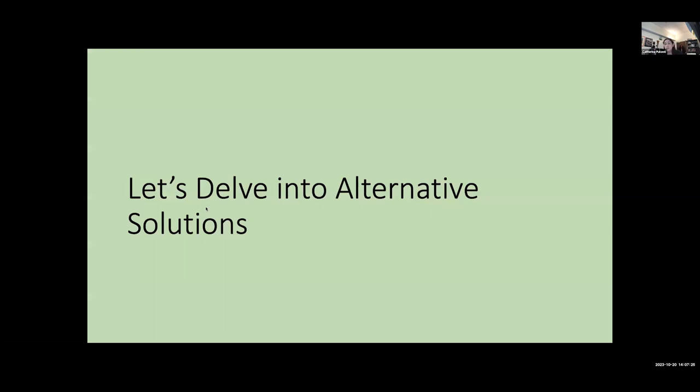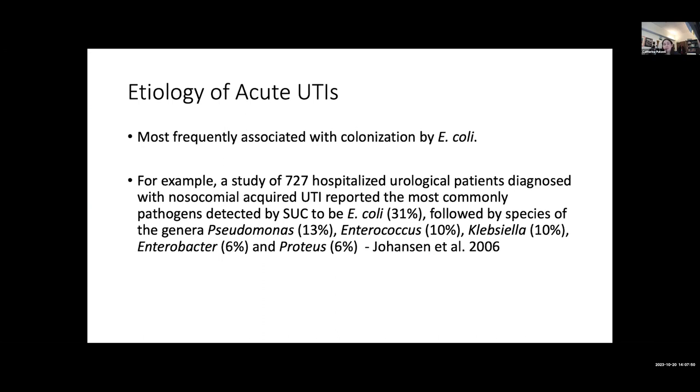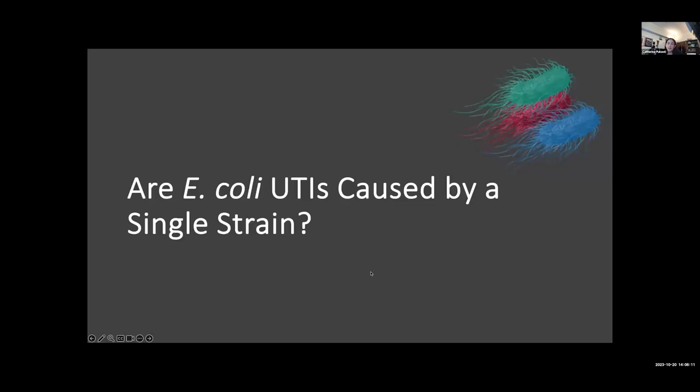These short read sequencing projects have been really instrumental in trying to give us a bird's eye view into the urobiome, but I'm interested in delving into alternative solutions. I'm going to present today two different studies, which I thought would be in submission, but alas, they are still in the process of getting submitted. Both of these studies are focusing on the urobiome of individuals with UTIs. E. coli is often referred to as the most common cause of acute UTIs. Some studies claim upwards of 70%, other studies can claim down to lower percentages. The first question that I wanted to ask is, are E. coli UTIs caused by a single strain of E. coli?